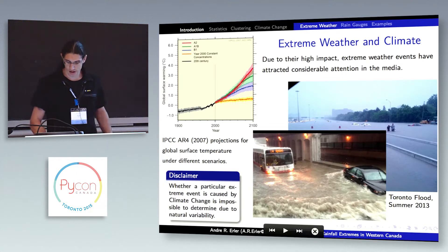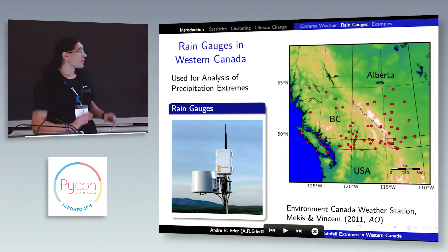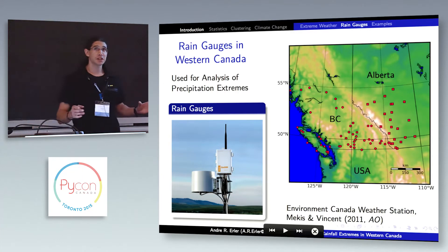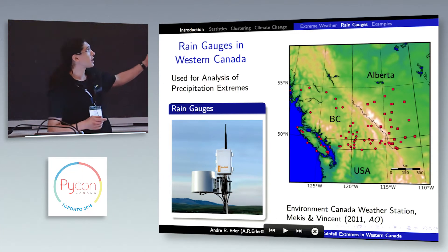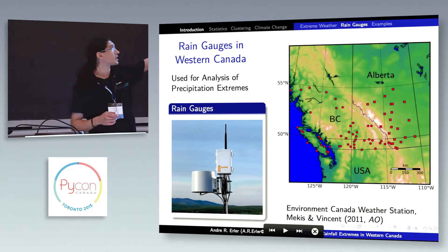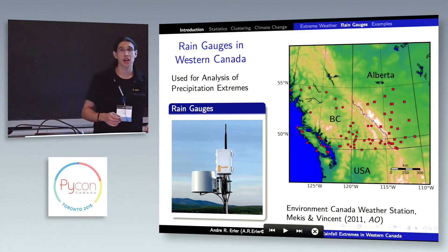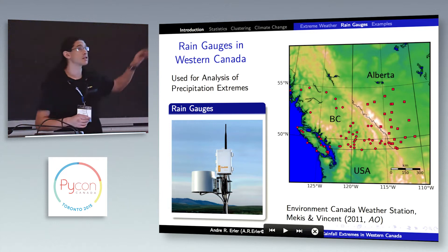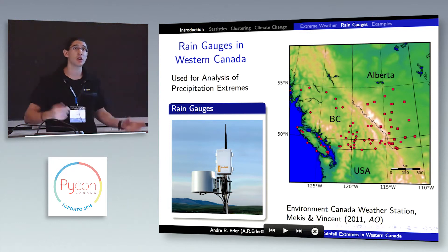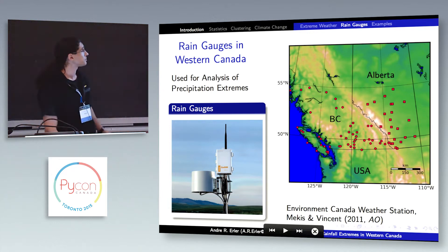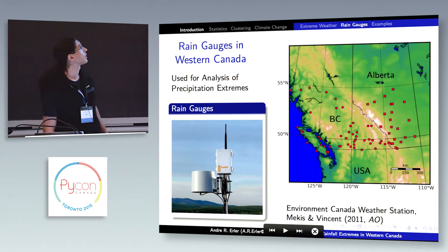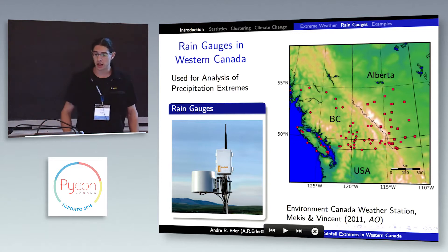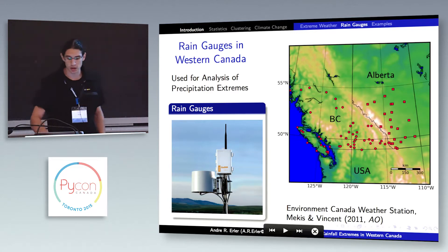The data I'm discussing here is from Environment Canada weather stations in Western Canada. All the red dots are the locations of weather stations, and this is just a picture of one of them. Most of them are automated.